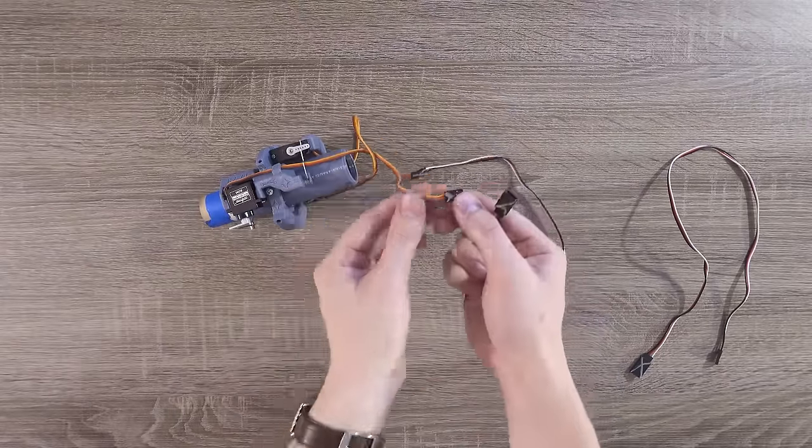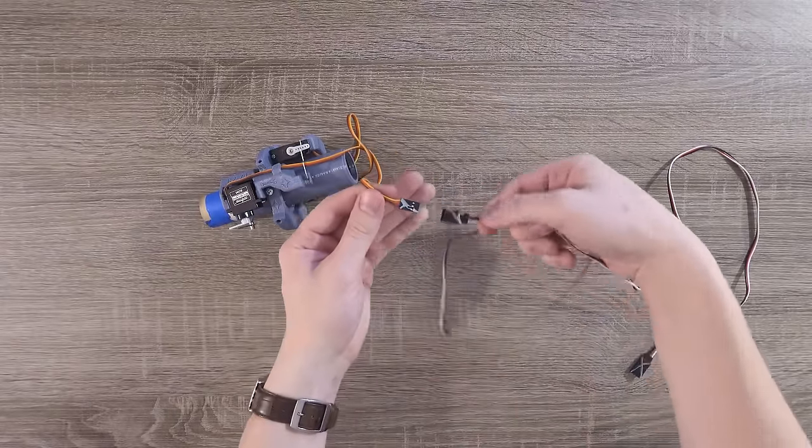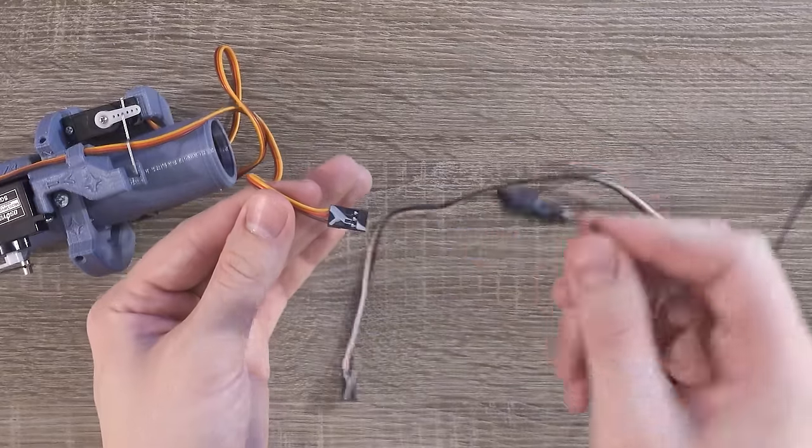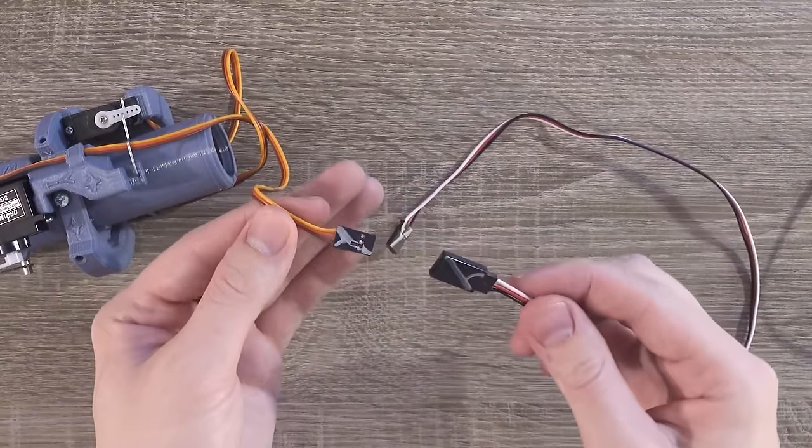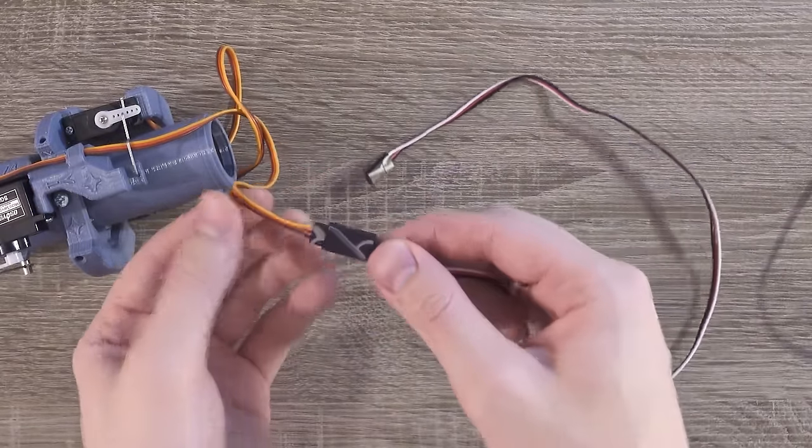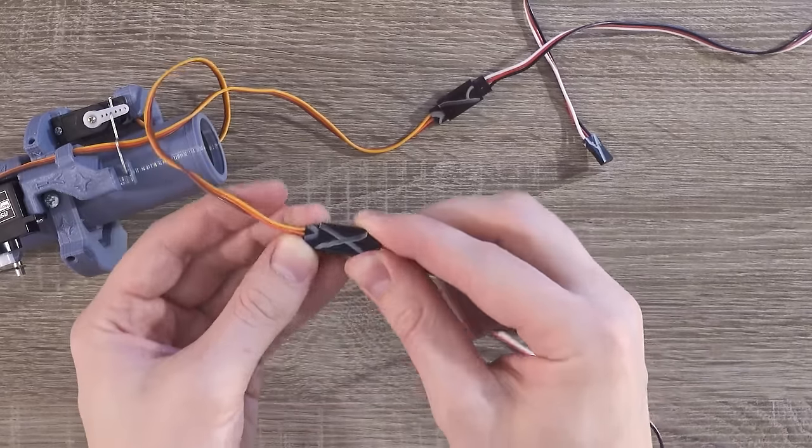With this complete, it's time to plug the servo cables into the extension cables. Of course make sure the letters match up, but also make sure the wires match up. The orange should go to the white wire, the brown to the black, and the red to the red. Plug them both in tightly to make sure they're secure.